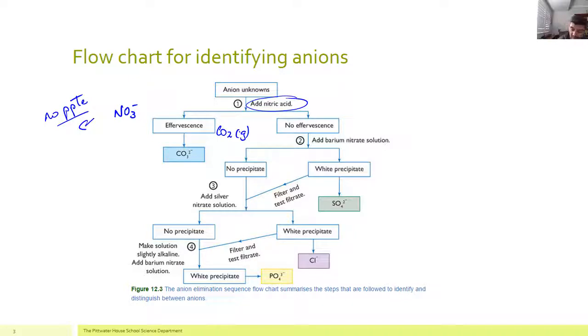If it doesn't, then what we want to do next is we want to get out the sulfate ions. We know barium will precipitate the sulfates, but not the other two. So if we get a precipitate by the addition of barium nitrate, then we know the sulfate's there.